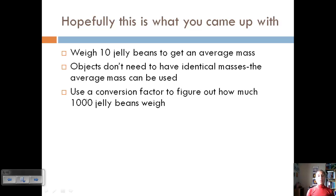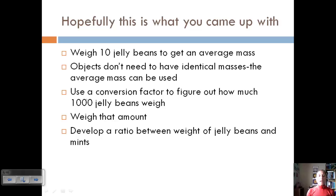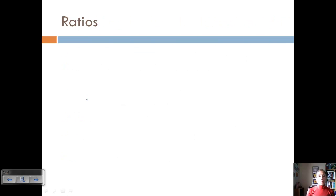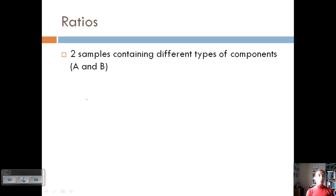We can use that conversion factor to figure out how much 1,000 jelly beans would weigh, and then weigh out that amount. If we also wanted to relate this to mints, we could develop a ratio between the weight of ten jelly beans and the weight of ten mints, and use that conversion factor to figure out how much 1,000 mints would weigh. This is where ratios become really important, especially when relating them to chemical formulas and working between compounds.